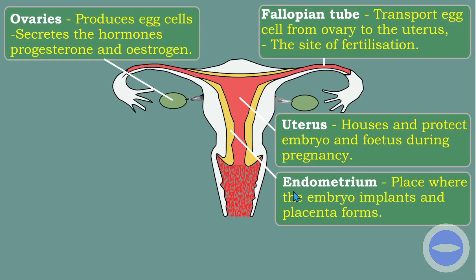The endometrium is the place where the embryo implants and the placenta forms. Every 28 days, a new endometrium is formed. The placenta is the connection between the baby and the mother, where diffusion of nutrients, water, and gaseous exchange takes place. The placenta is formed on the endometrium.